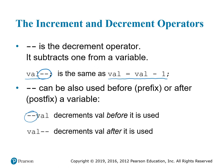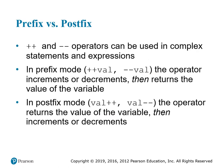Minus-minus val decrements before it's used; val minus-minus decrements after it is used. Another way of putting that: in prefix mode, placing plus-plus or minus-minus before the variable name, the operator increments or decrements then returns the value. In postfix mode, placing plus-plus or minus-minus after the variable, the operator returns the value then does the increment or decrement.